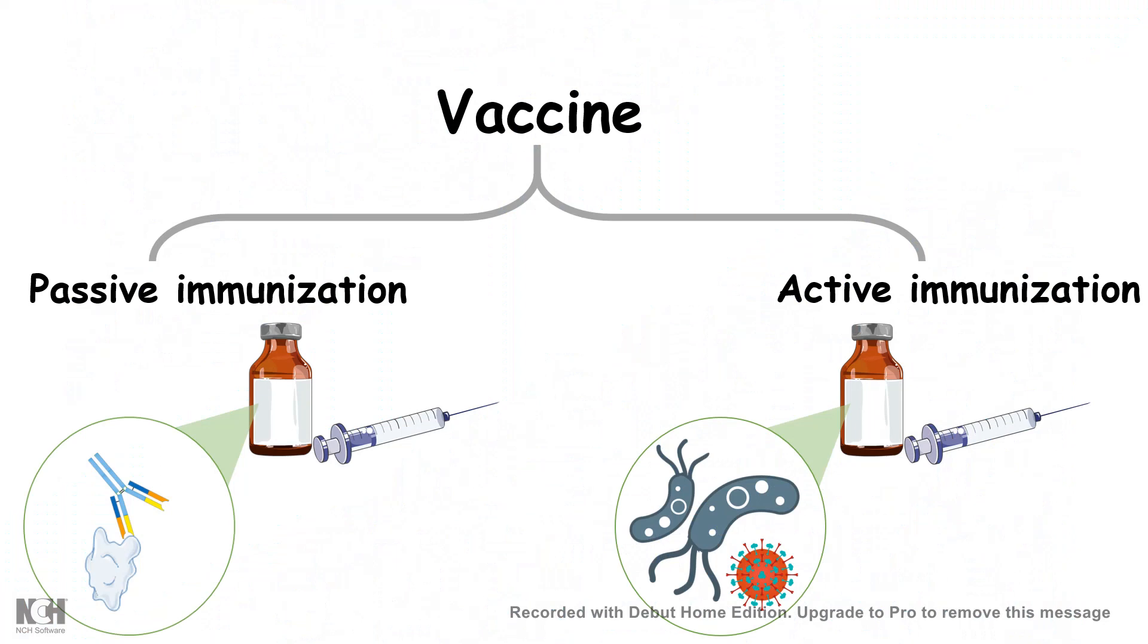Passive immunization and active immunization. In case of passive immunization, you use the antibodies which are going to be produced by the body, and you readily supply that. And in case of active immunization, you expose the body to less harmful state of the pathogen, let's say a heat-killed or an inactivated virus.